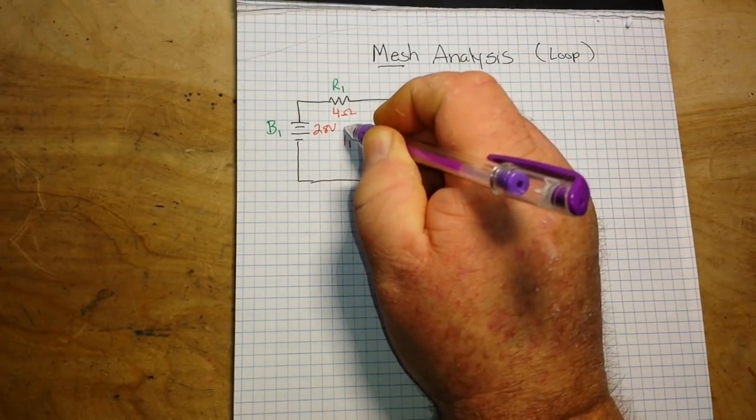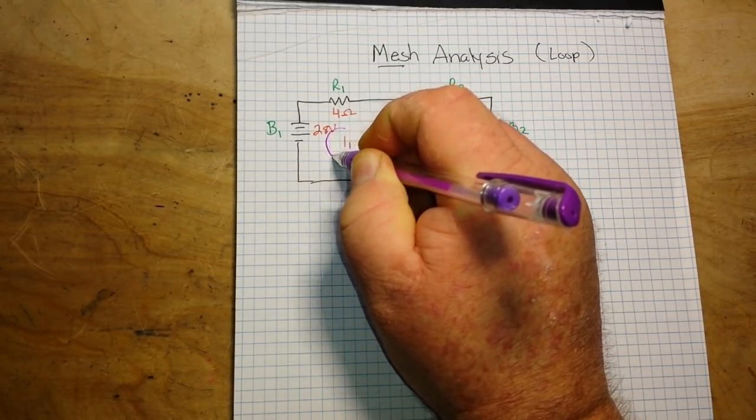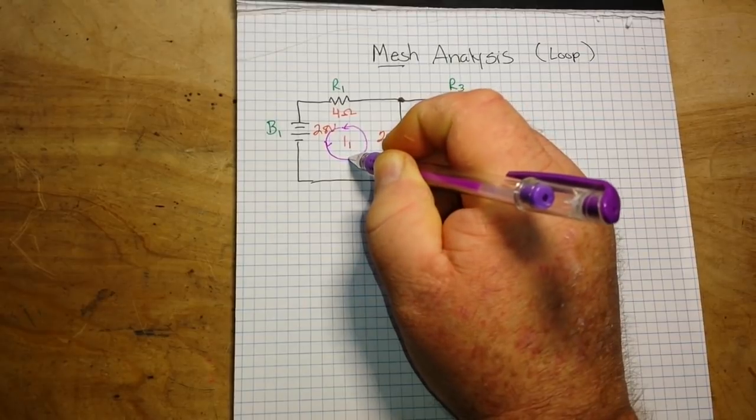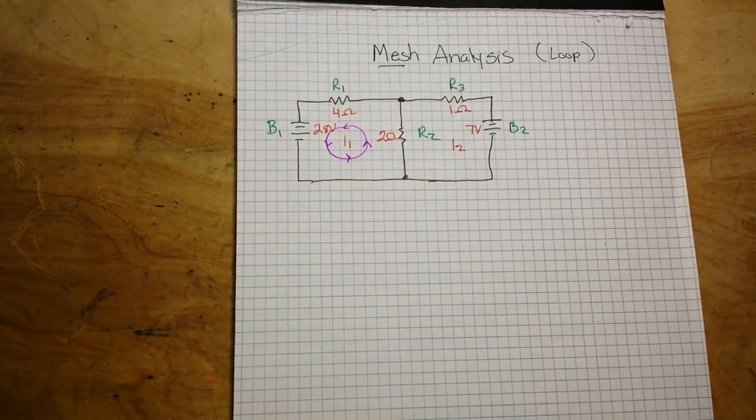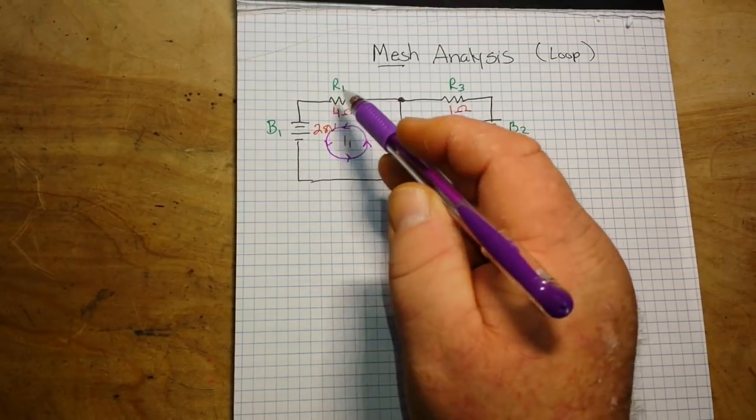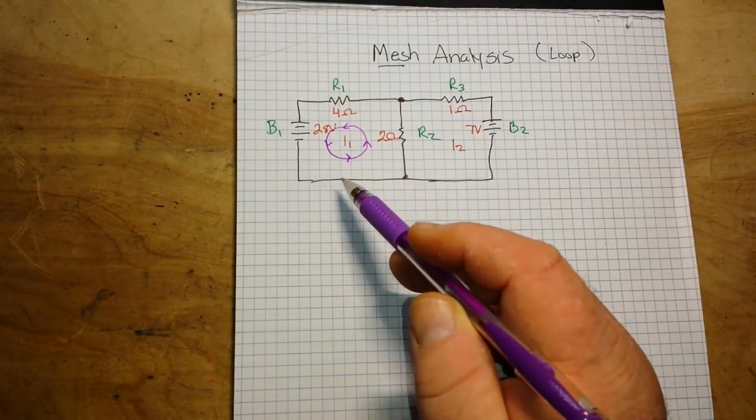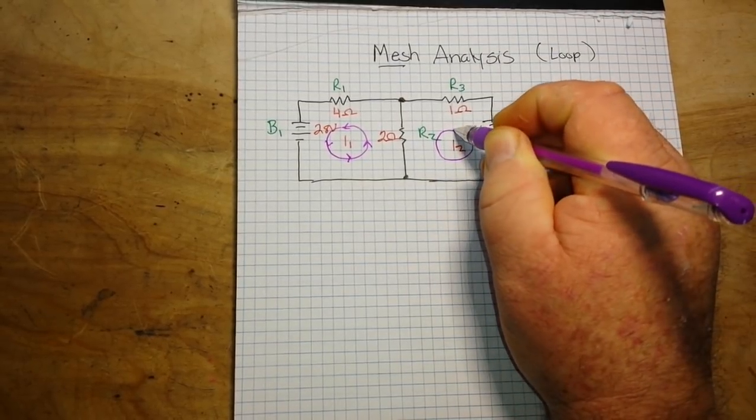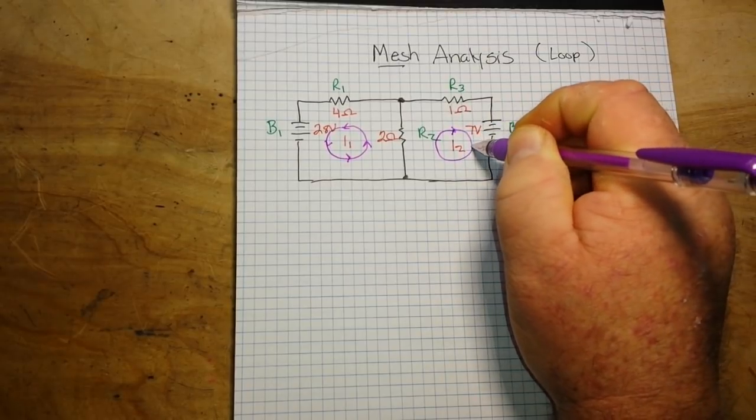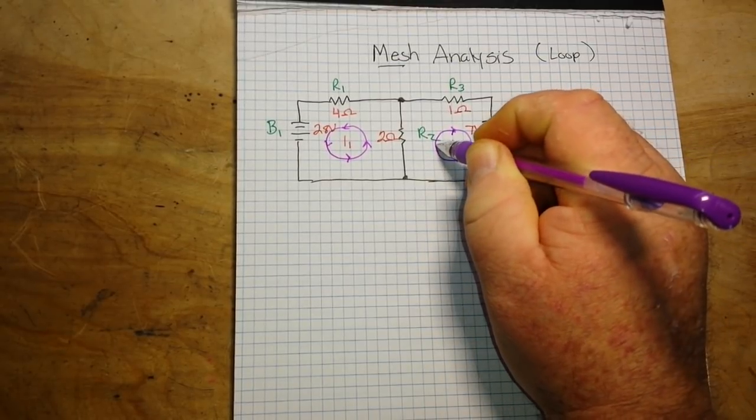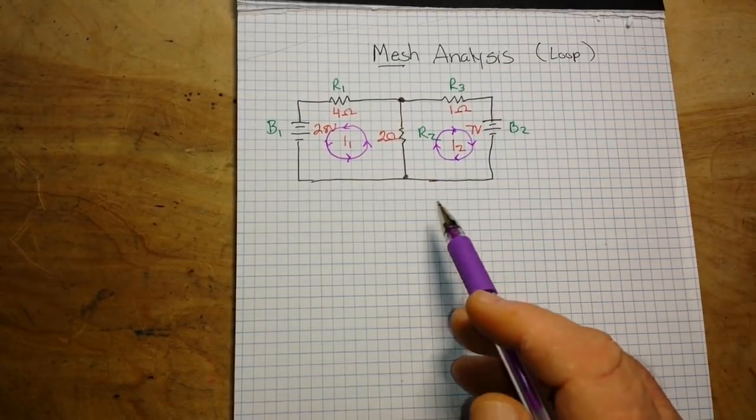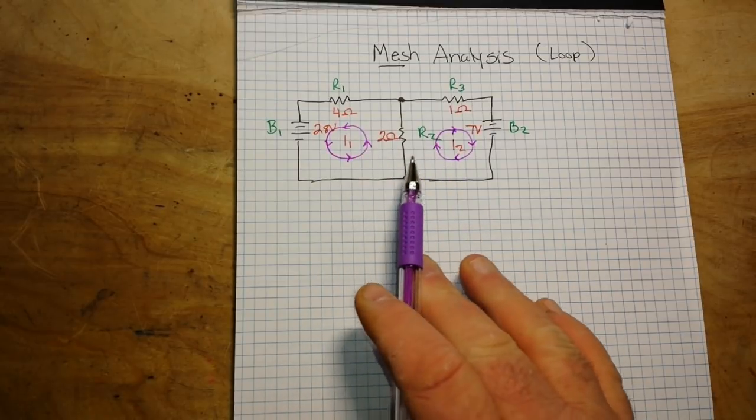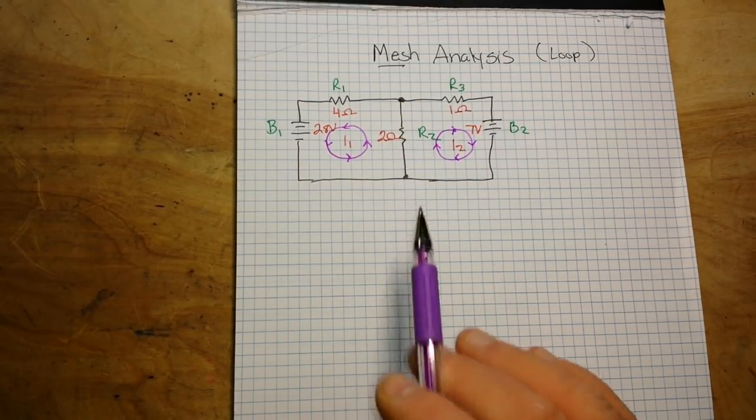So what we need to do is we need to determine the direction of the current flow. In this case the current flow is in this direction, and then over here the current flows in the opposite direction. Hence the name mesh analysis, because if you were to look at these two current flows they would appear to mesh together like a set of gears.